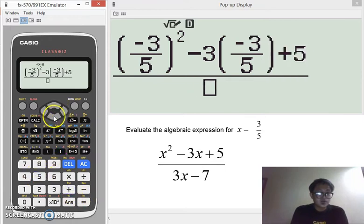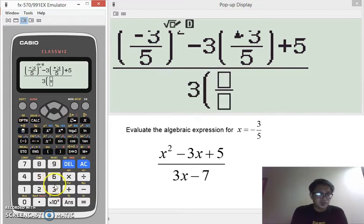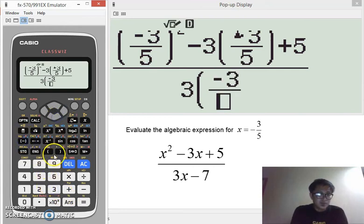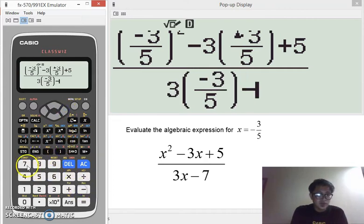And then for the denominator, that's 3x minus 7. So, it's 3 times the quantity negative 3 over 5, and minus 7.